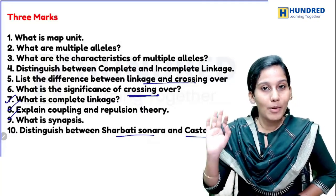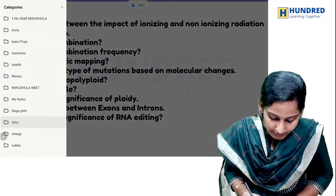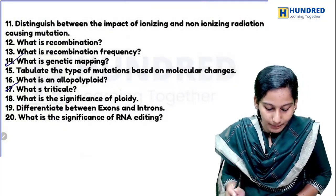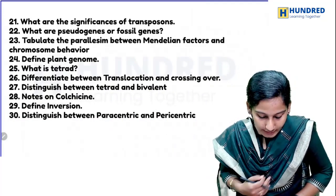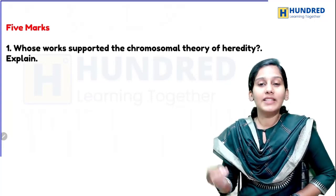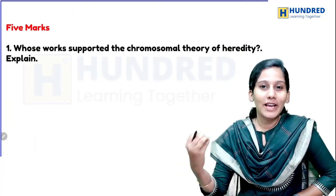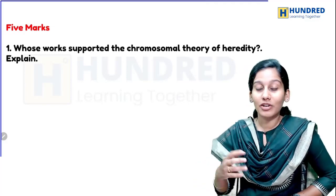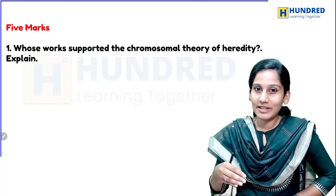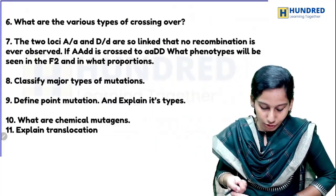We will study these questions. Ploidy — we can ask a question for ploidy. Genetic mapping. Significance of transposons. Translocation — for five marks or two to three marks. This chapter is very important; we can elaborate in five marks. Ploidy is complete; expect five-mark questions in this chapter. Also mutations are important.